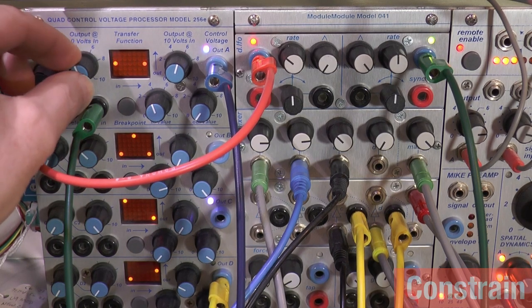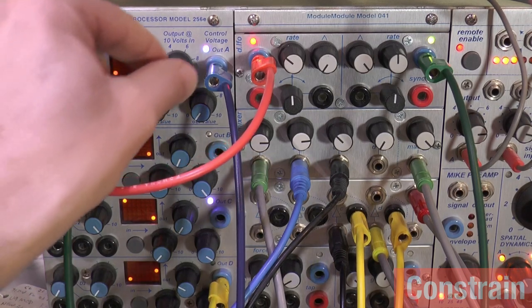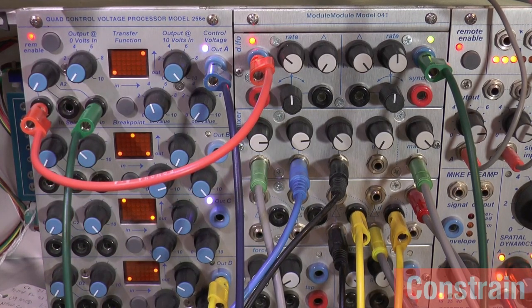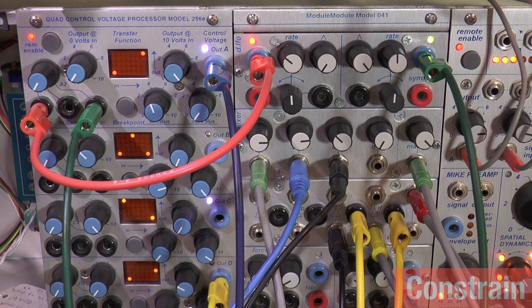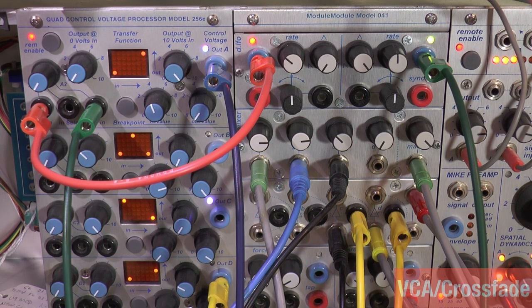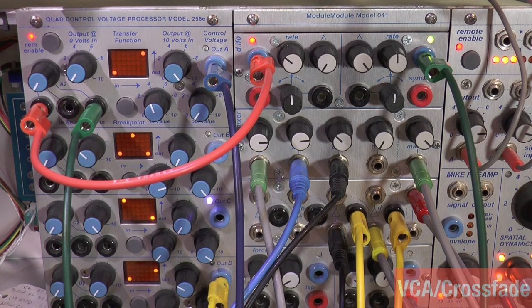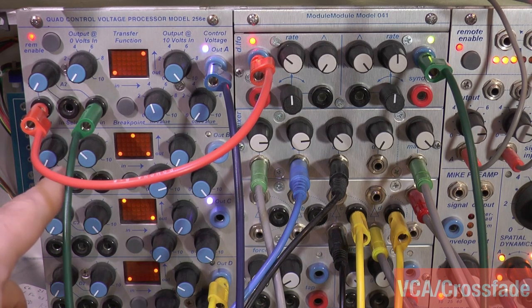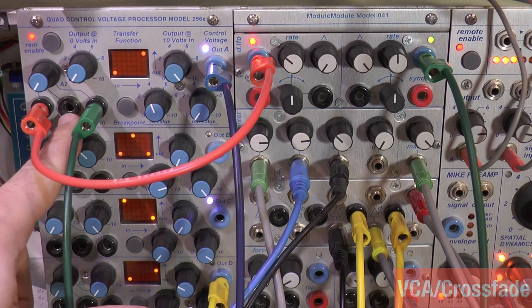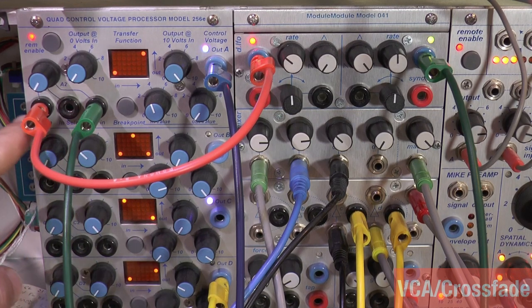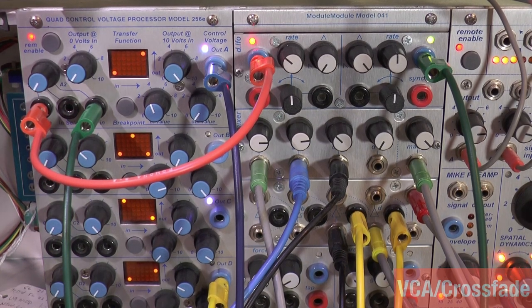We can show that by using breakpoints as well. So one of the great features of the 256e is it's the only Buchla branded control voltage processor - not even the 257e will do this - that acts as a VCA for control voltages. So you have input A1, you can see here.